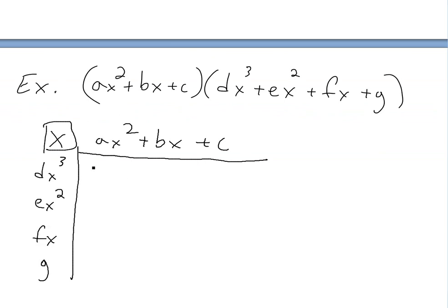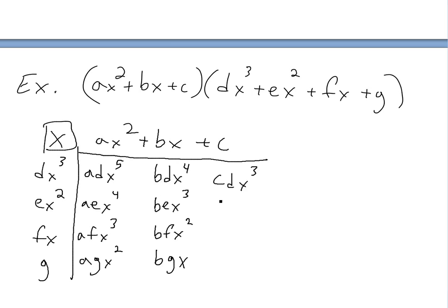Now we can easily expand this out. Multiplying the terms gives us: ADx to the fifth, AEx to the fourth, AFx cubed, AGx squared — and continuing for all rows, we eventually get down to CEx squared, CFx, and CG.